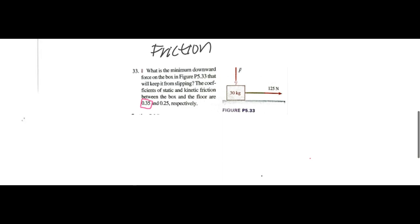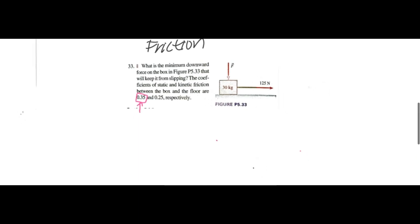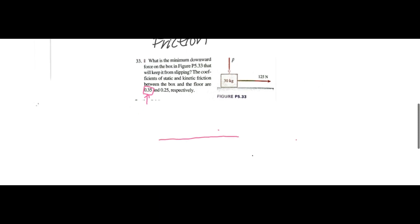We have a friction problem. What is the minimum downward force on the box in the figure that will keep it from slipping? The coefficient of static and kinetic friction between the box and the floor are 0.35 and 0.25 respectively. I've highlighted the static friction here because we're going to be using static friction instead of kinetic friction, because static friction is the friction that it's going to take to keep an object from moving when it is stationary, whereas kinetic is when an object is moving.